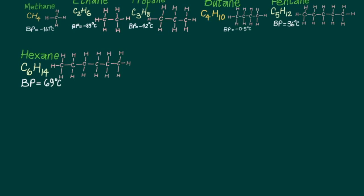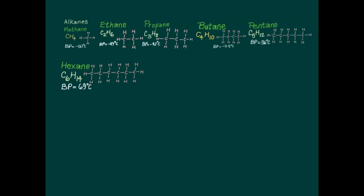Let's consider a family: the alkanes. The alkane family includes methane, ethane, propane, butane, pentane, and hexane. The general formula for an alkane is CnH2n+2.